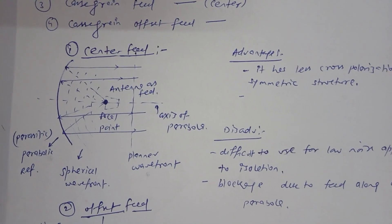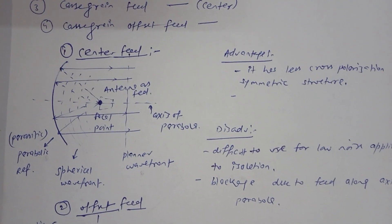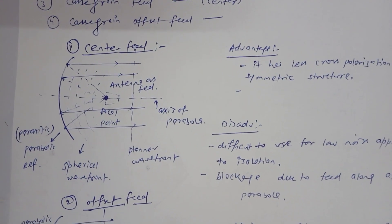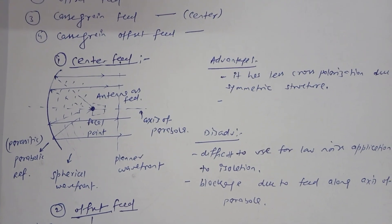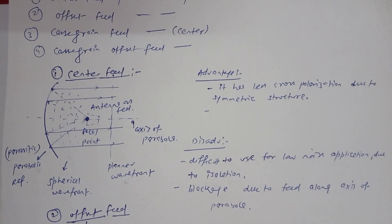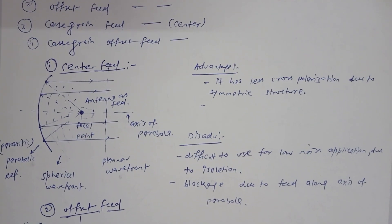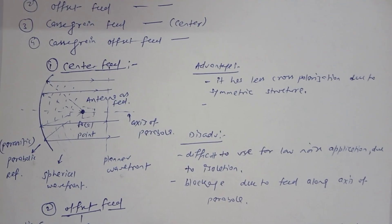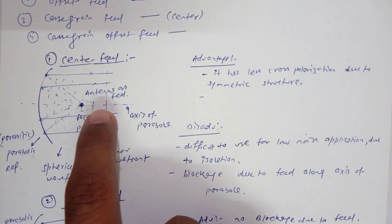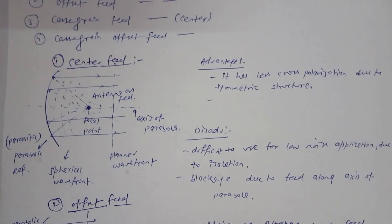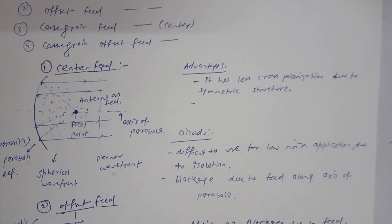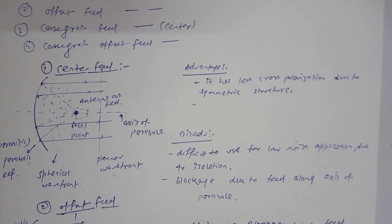The advantage of the center feed mechanism is that because the structure is symmetric about the axis of the parabola, there is no cross-polarization. The disadvantages are: due to isolation, it is difficult to use for low-noise applications; and when used for reception, the horn antenna causes signal blockage along the axis of the parabola.